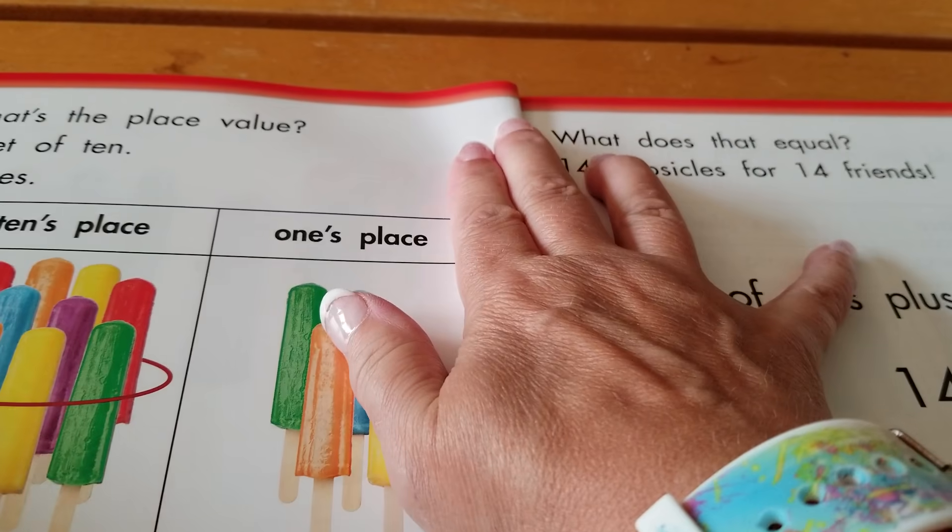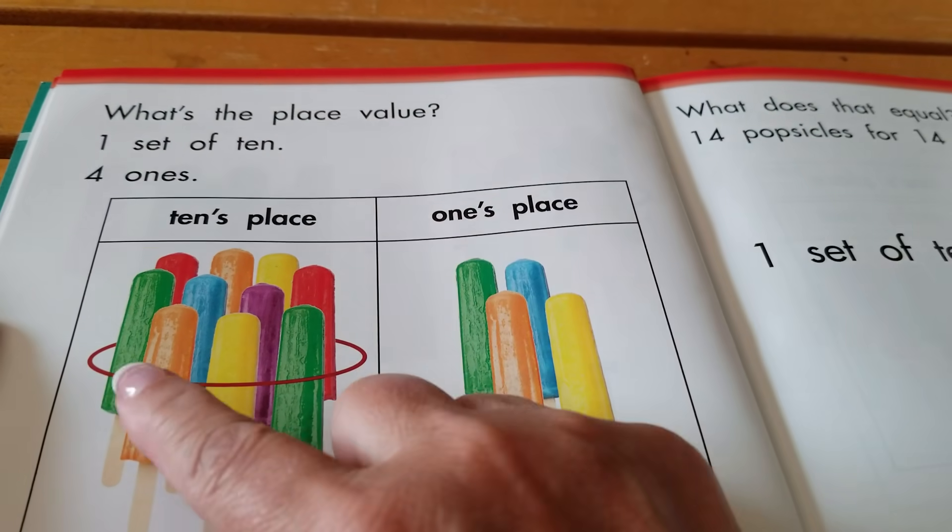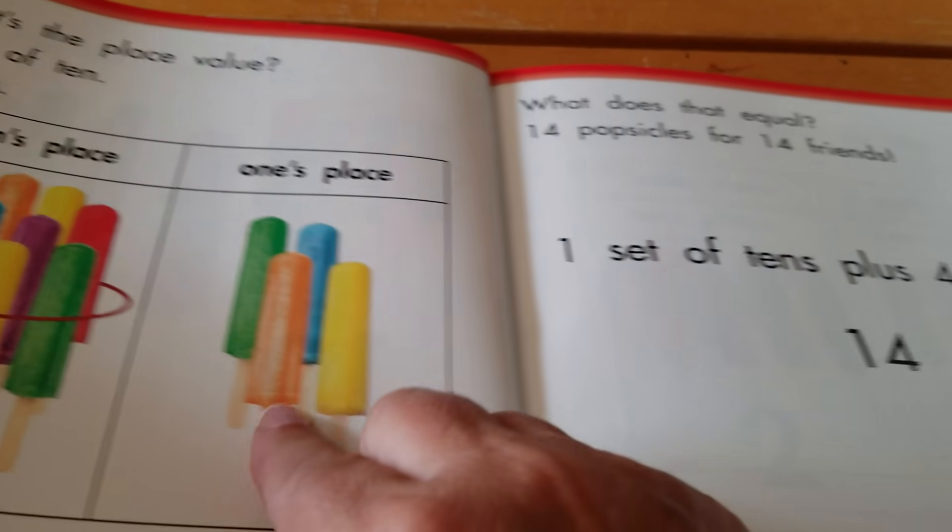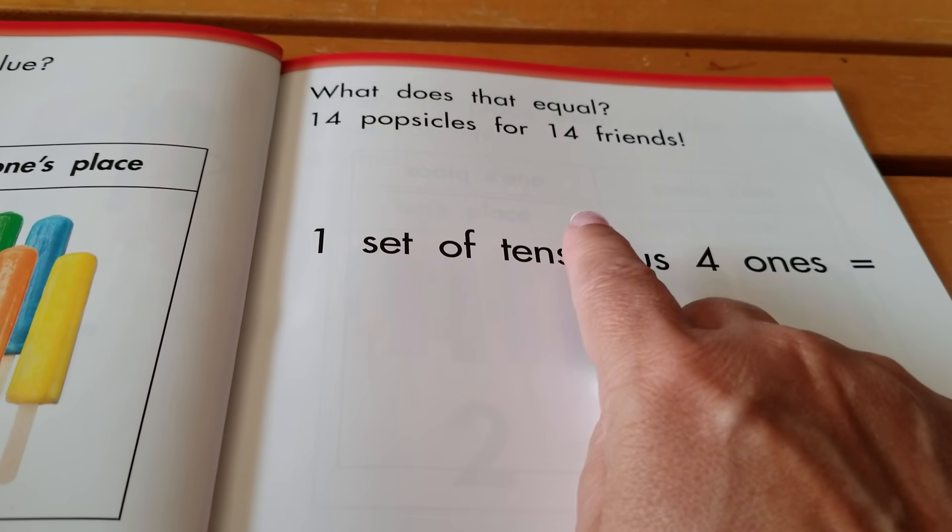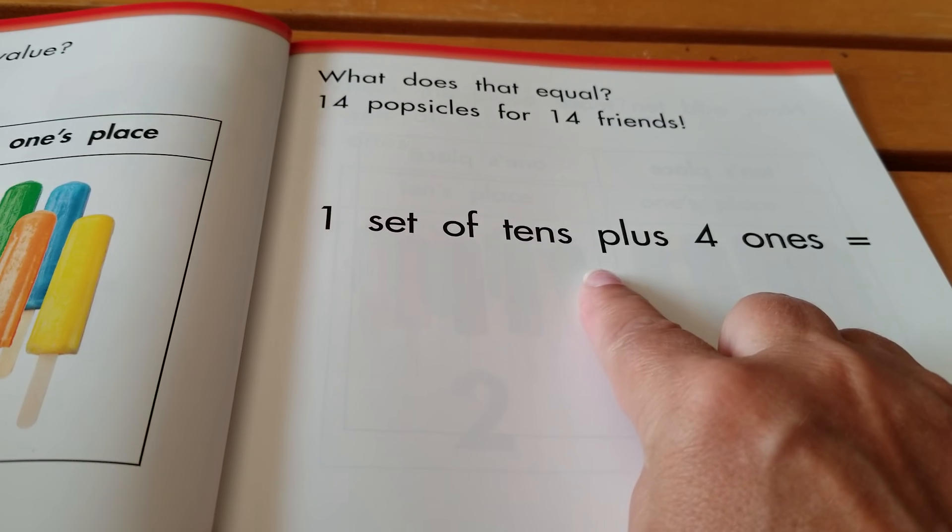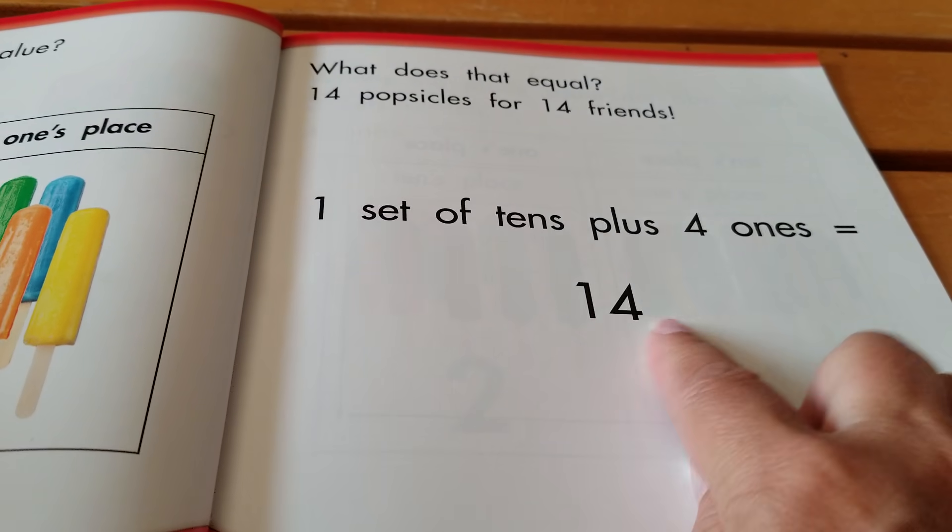What's the place value? One set of tens, four ones. What does that equal? Fourteen popsicles for fourteen friends. One set of tens plus four ones equals fourteen.